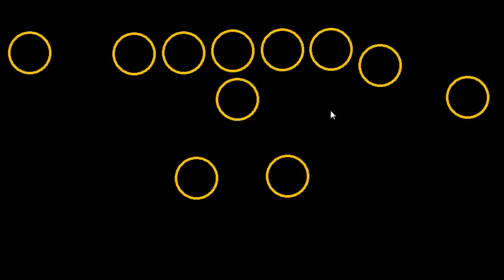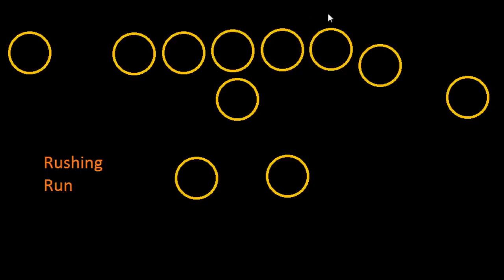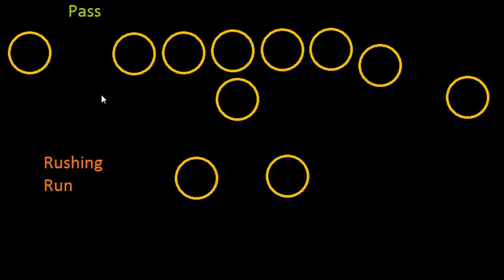Following up on the video about downs, this video looks at what rushing and passing mean. It all gets back to how you gain yardage, because you can't score without moving down the field. When your team is on offense, you have two options to move the ball forward: rushing, sometimes called a run, or passing. Basically every play will resolve as either a rush or a pass.